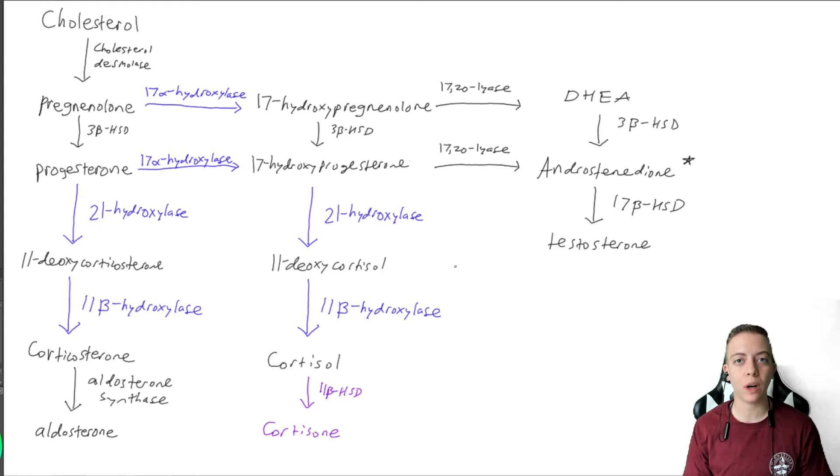Last time we talked about 21-hydroxylase deficiency and what that looks like in a fetus. Today we're going to look at something very similar, which is 11-beta-hydroxylase deficiency, which follows a very similar mechanism to 21-hydroxylase. However, there is a key difference in this pathway that causes the presentation to be almost exactly the opposite of what you see with 21-hydroxylase deficiency.